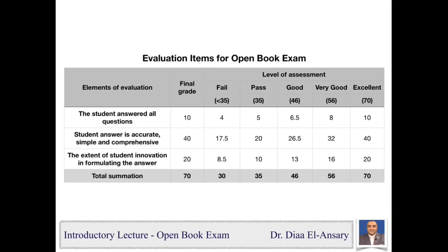The second evaluation component is whether your answer is accurate, simple, and comprehensive. This component carries the most points — 40 marks out of 70. We recommend that you read the questions well several times, use your time wisely to think about your answer, arrange your thoughts so that the most important ideas come first, and summarize your answer in an appropriate way.